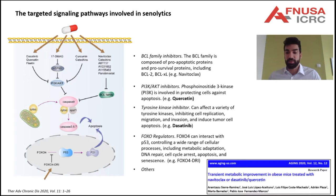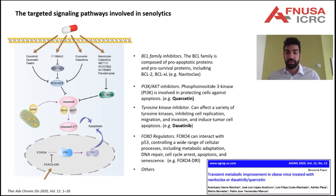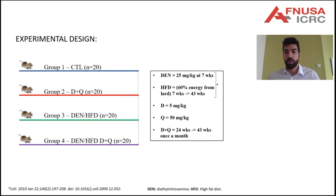These two are dasatinib, a tyrosine kinase inhibitor with chemotherapeutic use, and quercetin, a plant flavonoid with PI3K-AKT inhibitor activity. This senolytic cocktail showed, in a recent study published in Aging, that NAFLD pathology is driven by cellular senescence. However, this previous report did not analyze the effectiveness of senolytics in halting the progression of NAFLD into an inflammatory state and, finally, into hepatocellular carcinoma.